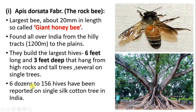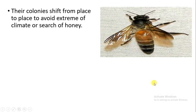You can see 6 to 156 hives on a single silk cotton tree — this has been found in India. Apis dorsata is able to shift from place to place under extreme or unfavorable climatic conditions, or in search of nectar when flowers decrease. From a single vertical comb, 36 kg — about 60 pounds — of honey can be obtained, and 1 to 2 kg of beeswax can also be obtained from one comb.